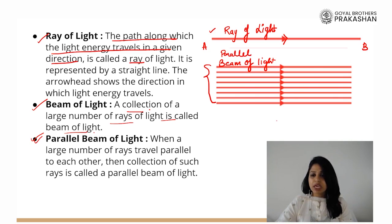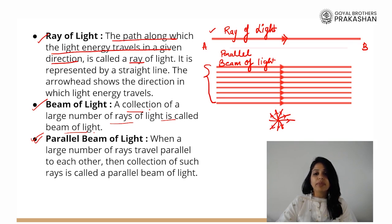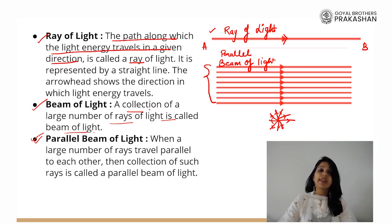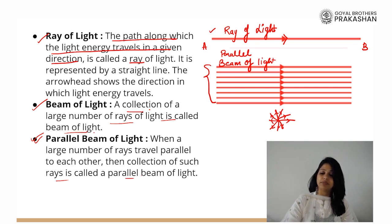What could be the other kind of beam? If rays are coming in all directions — are they parallel? No, they are not. So when we talk about a parallel beam of light, a large number of rays travel parallel to each other, and the collection of such rays is called a parallel beam of light.